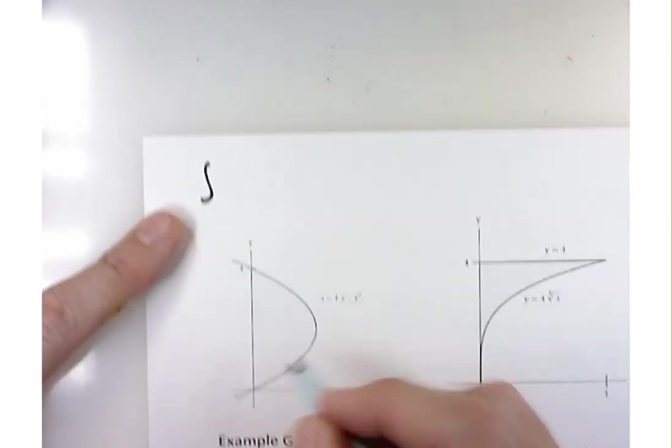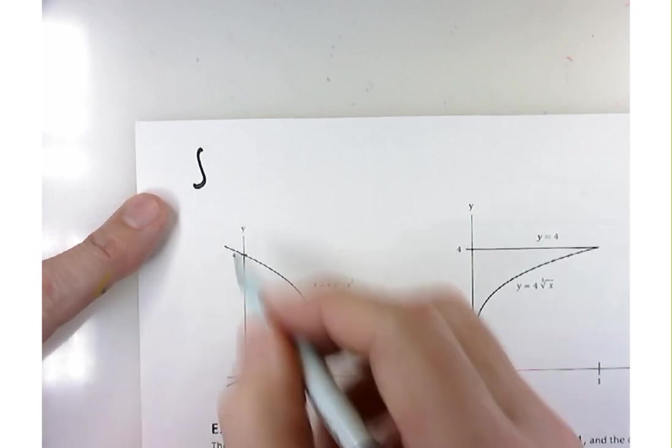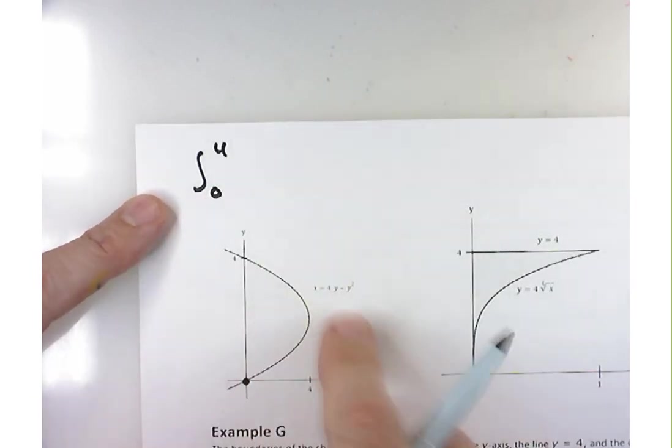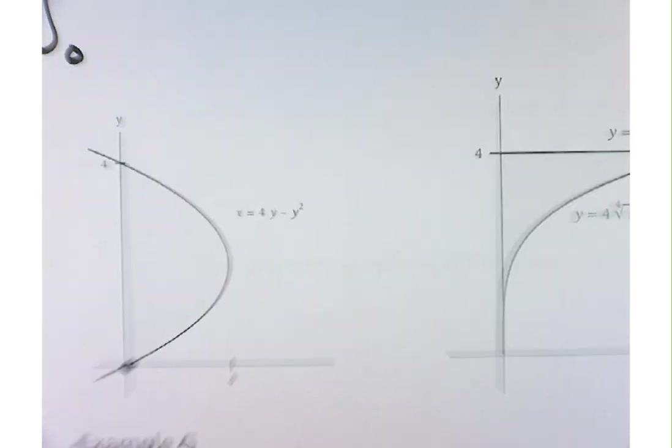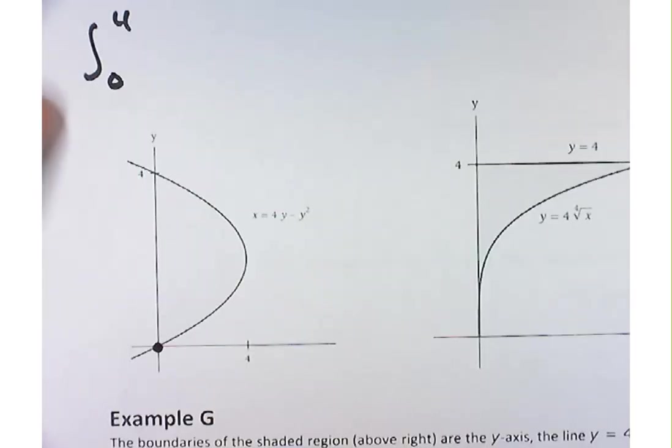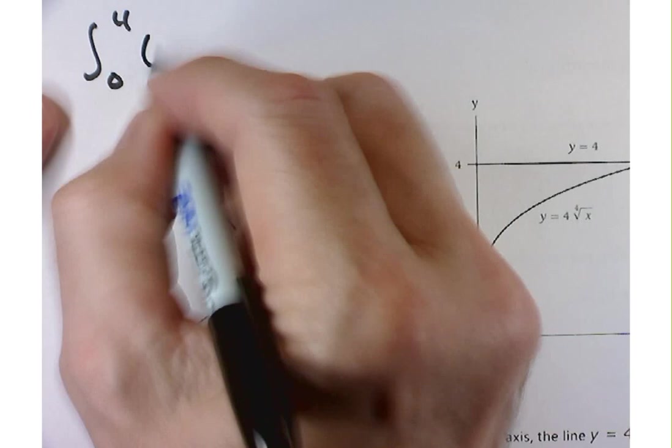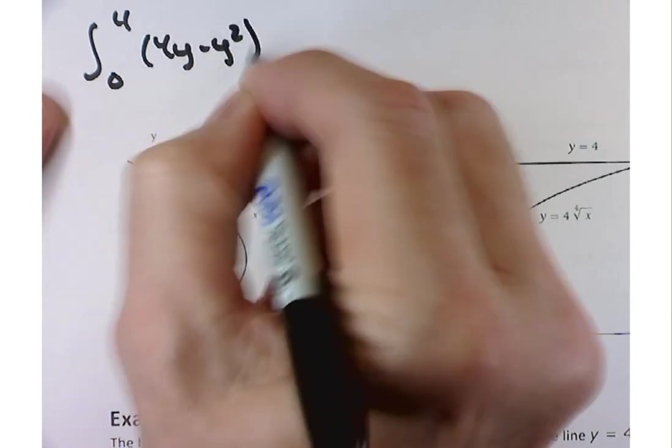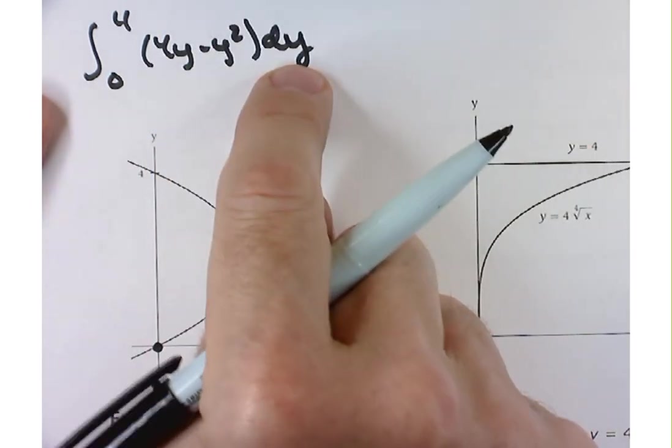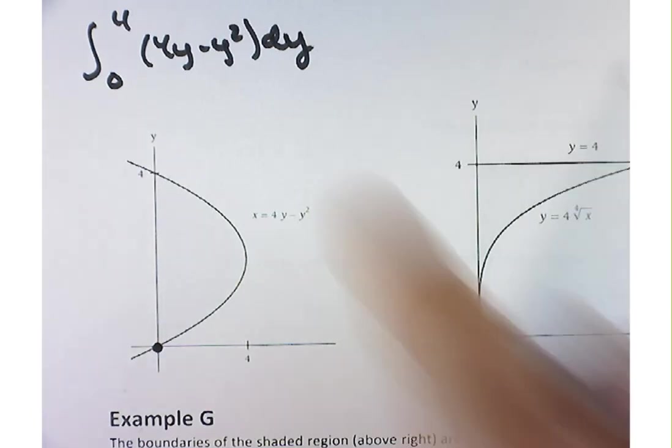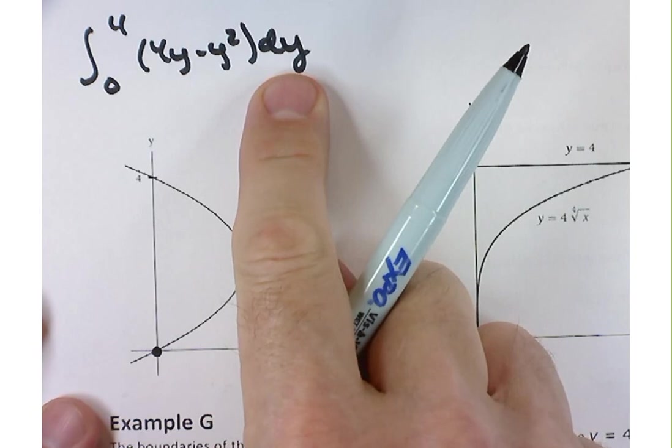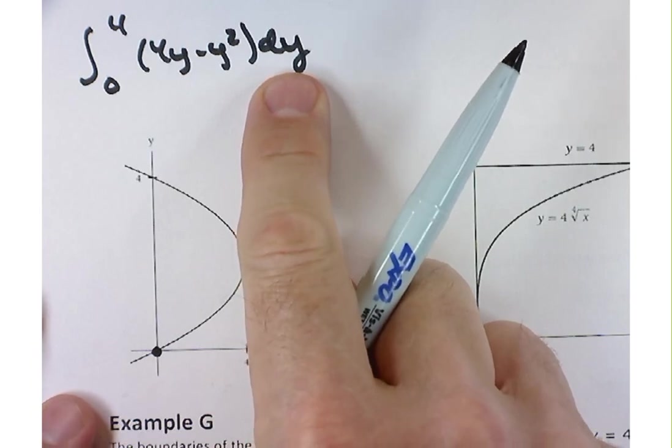So what's our integral going to look like? It's going to be the integral from 0 to 4 of this function 4y minus y squared dy. So again, that differential makes an important difference here. We're integrating with respect to y, not with respect to x.